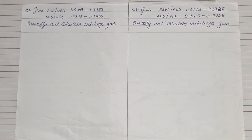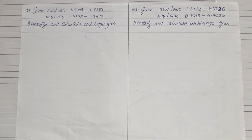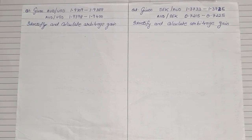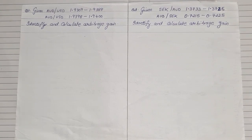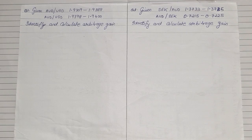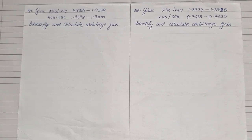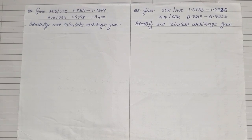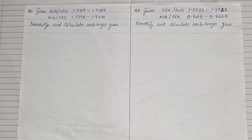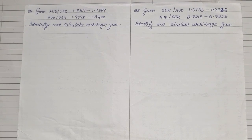Now let us see how to identify arbitrage gain when we have two bank transactions. I'll be showing you a very simple trick to identify arbitrage — with this trick, anyone can easily solve any sum involving two transactions. In this video we are only going to learn how to solve sums with two transactions given; for triangular transactions, there will be a separate video.